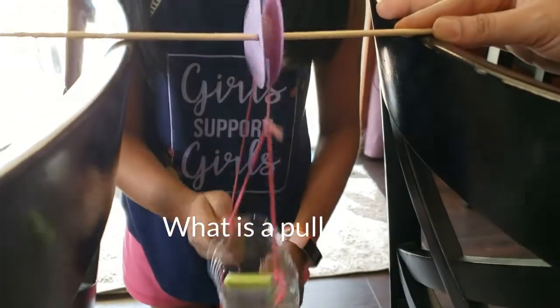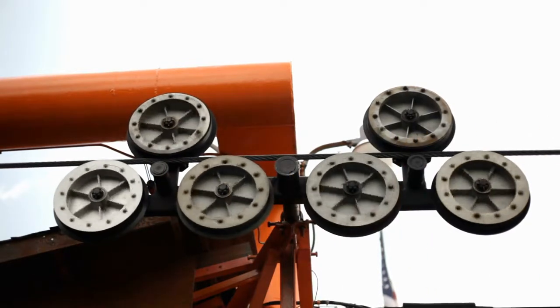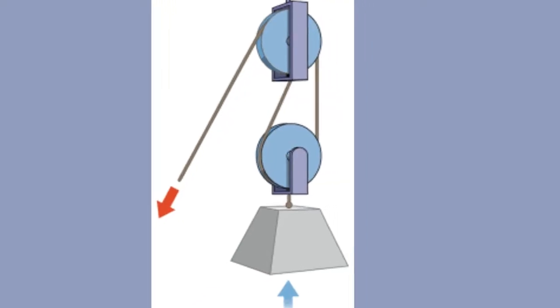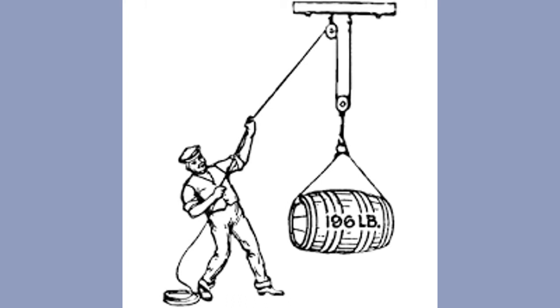A pulley is a collection of one or more wheels with grooved rings in which a cord is looped over. It changes the direction of a force being applied to it, making lifting heavy things easier.